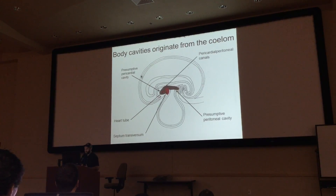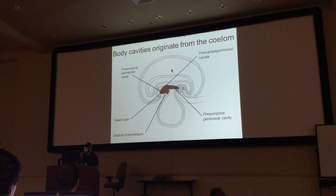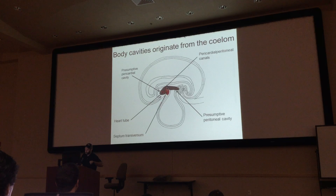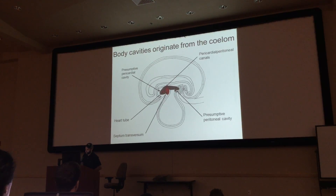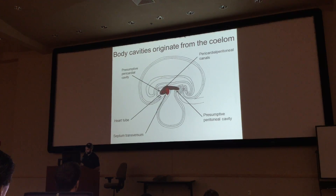This is labeled to show what's going to become what. Here's your septum transversum, here's the heart tube, and the presumptive pericardial cavity. The pericardioperitoneal canals are the canals connecting your thorax and abdomen that get closed off by your diaphragm. The presumptive peritoneal cavity is the posterior part of the intraembryonic coelom. Essentially all the cavities we're talking about came from the intraembryonic coelom — the extraembryonic coelom didn't make any of this stuff.